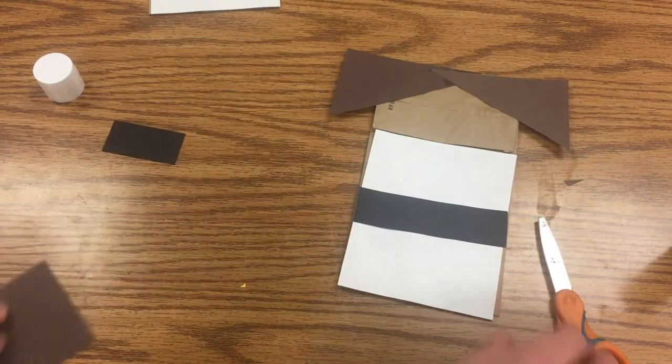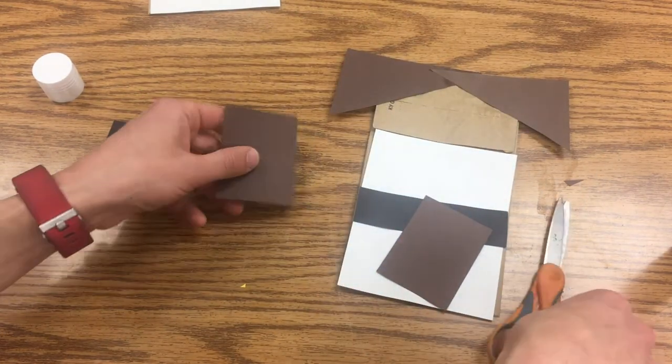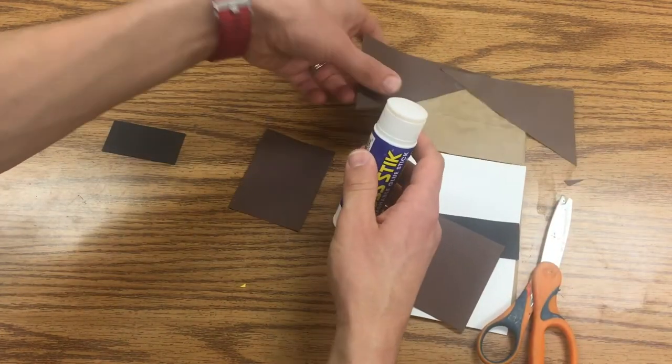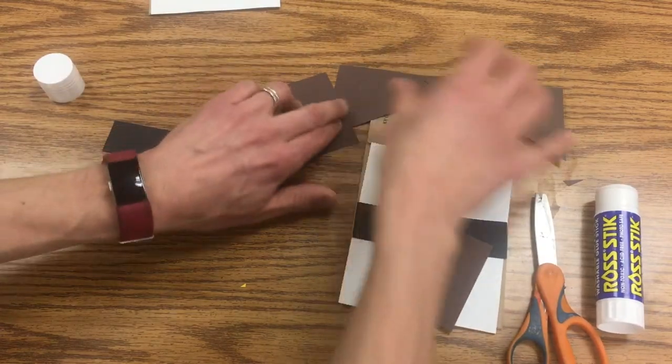All right, then we will take one more rectangle, cut it in half this way, and we're gonna put just a little bit of glue on the back of the triangle and let that sit right there.